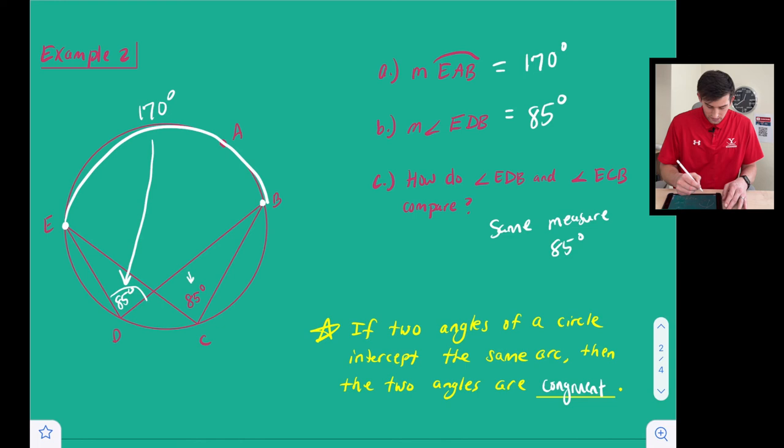Two angles. So that was angle EDB and angle ECB. If they intercept the same arc well they're intercepting the same arc because both of their end points of these two angles are E and B which is part of the major arc EAB. So we could say that those two angles are congruent.